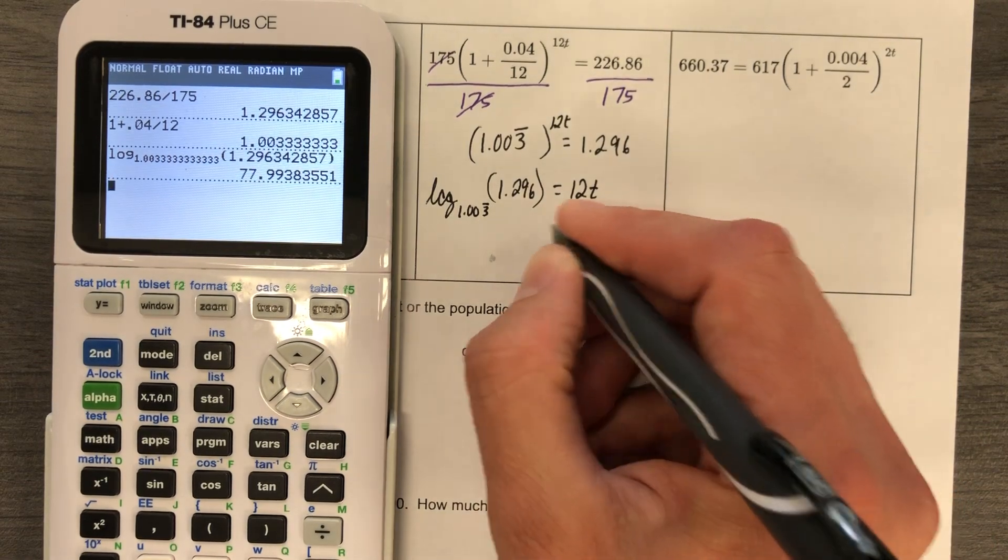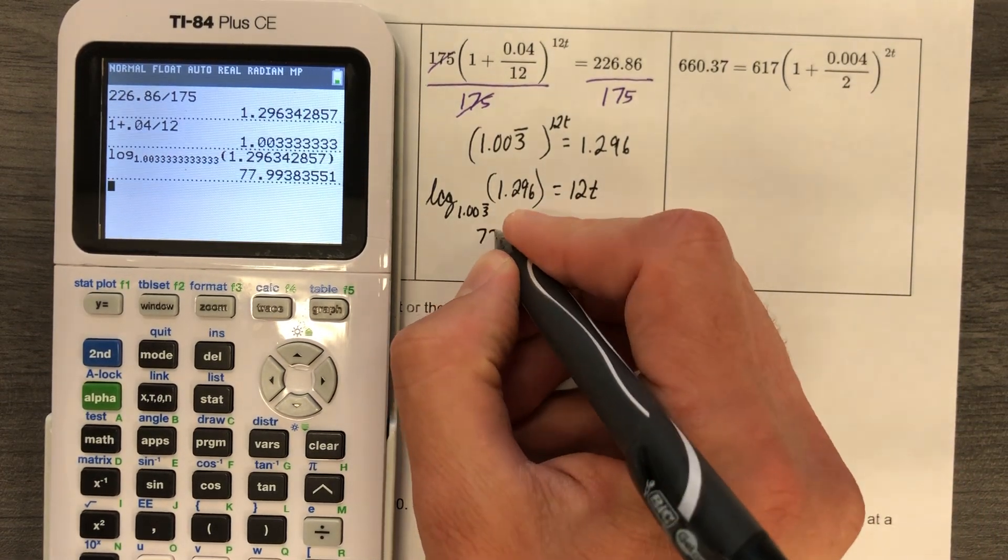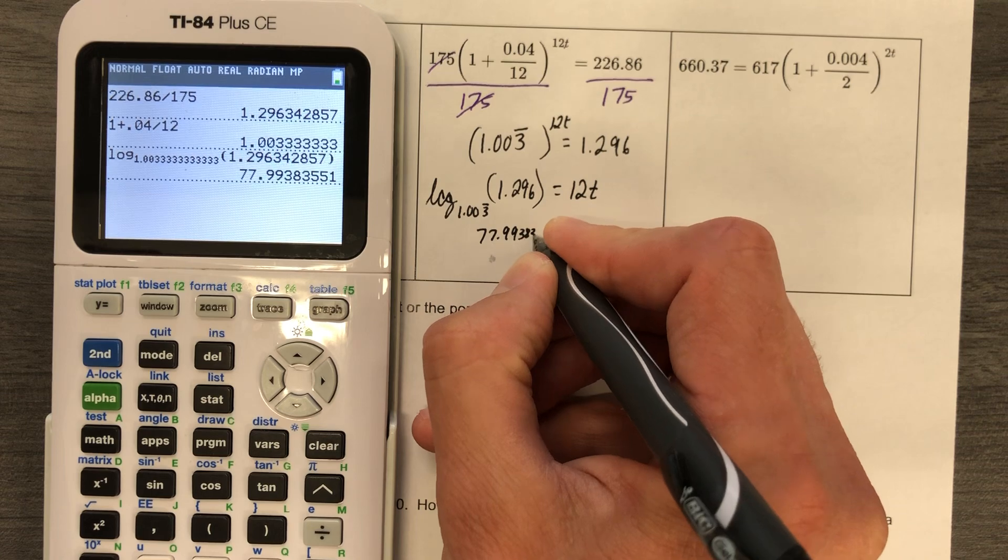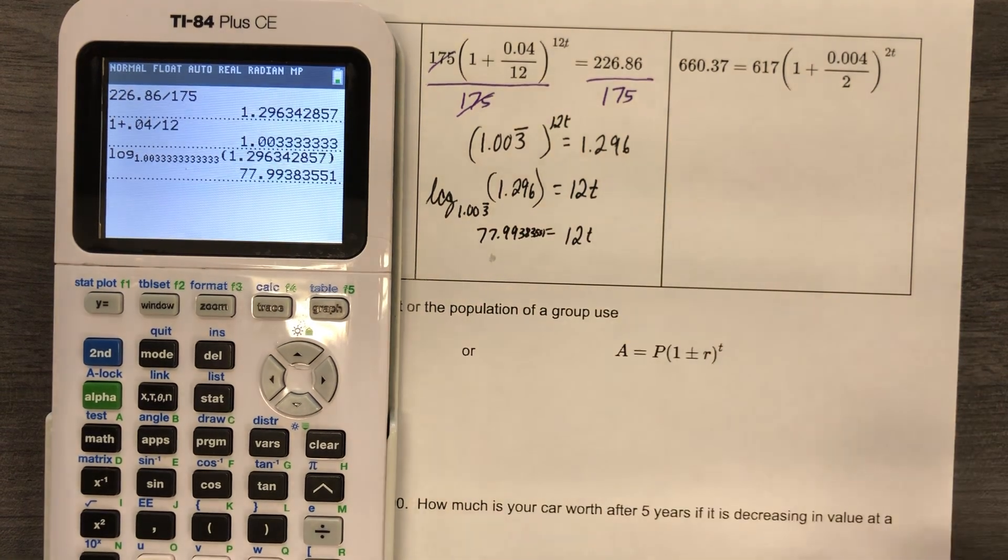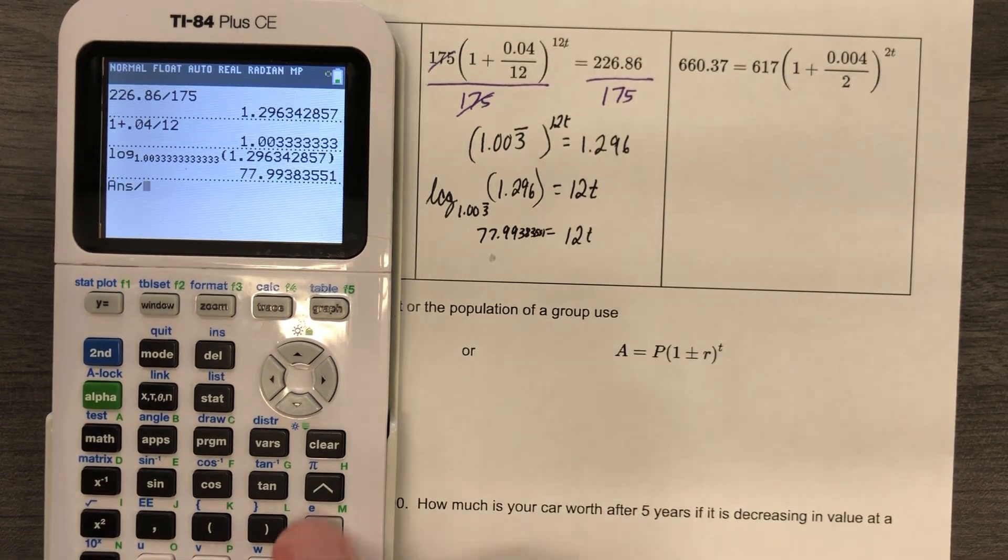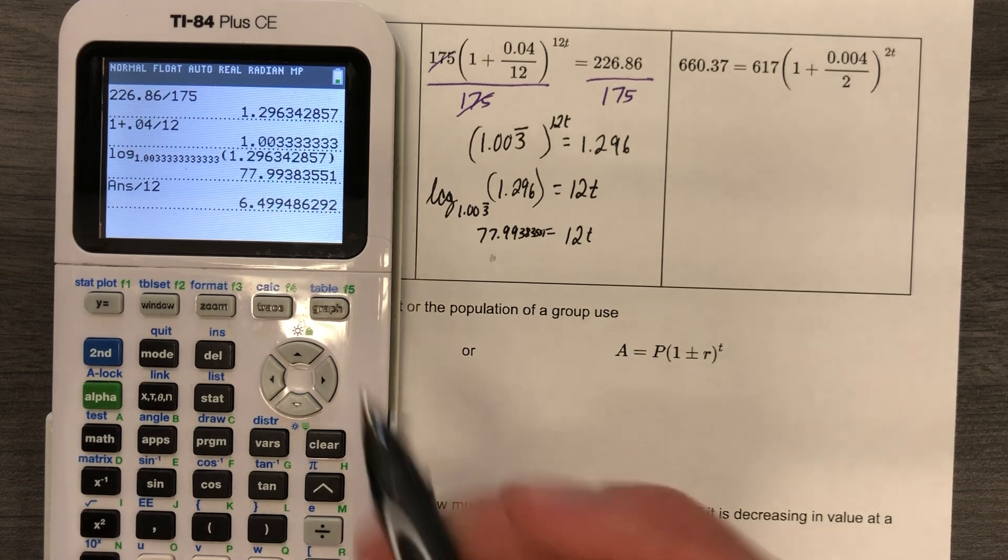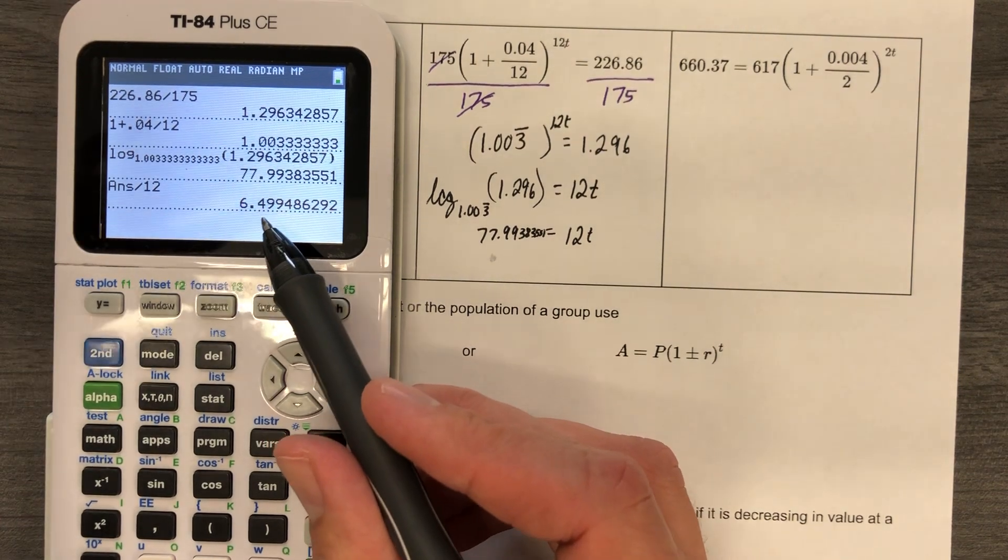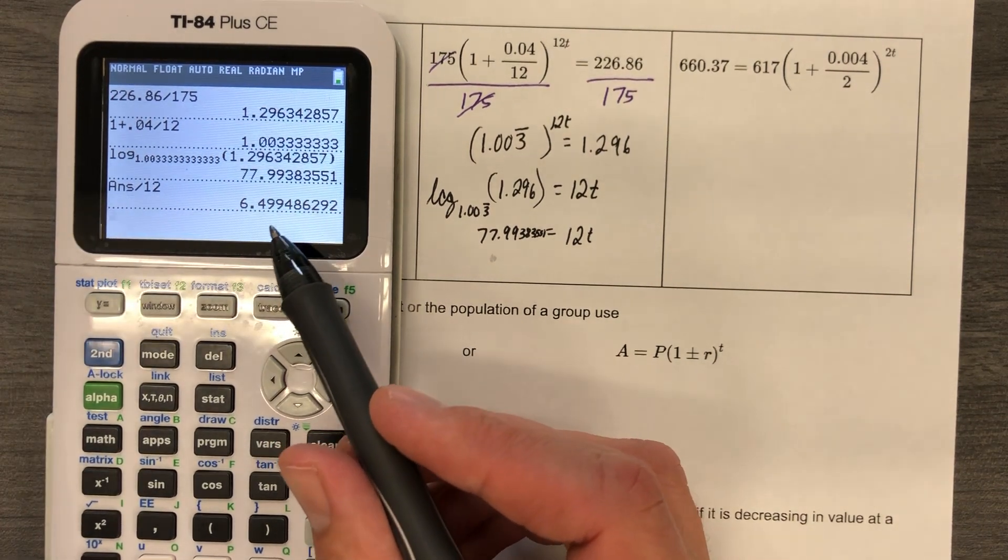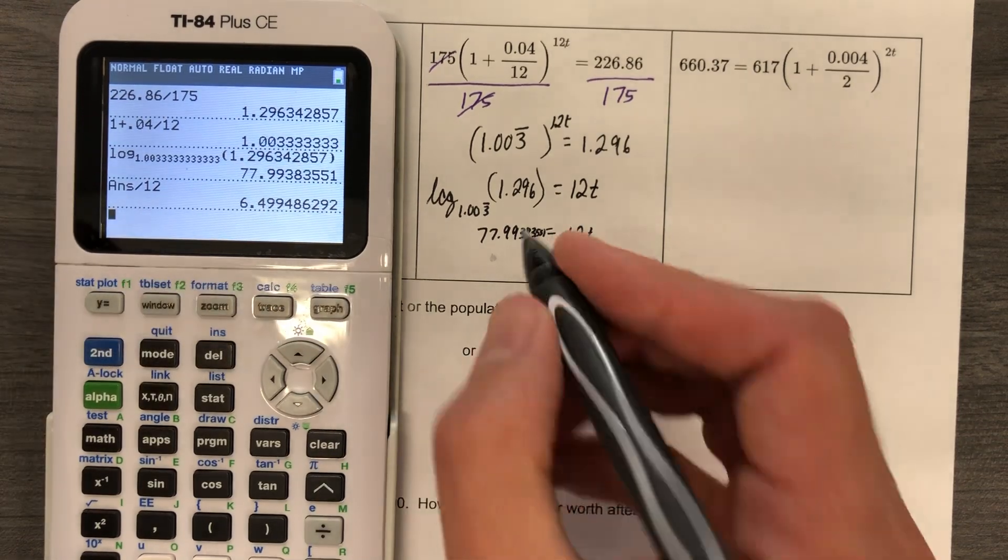Now, I have 12t equals 77.99383551. You're like, what in the world? Okay, you're going to have to divide by 12, and this one's going to be pretty logical as well. Six and a half. At this point, it's like really obvious. I don't know. You're like, oh, let's round to three decimal places. Trust me, six and a half.